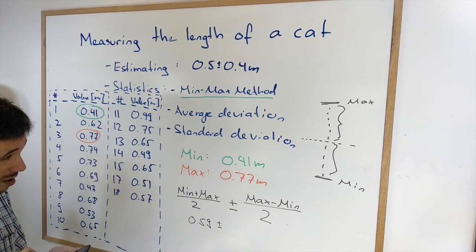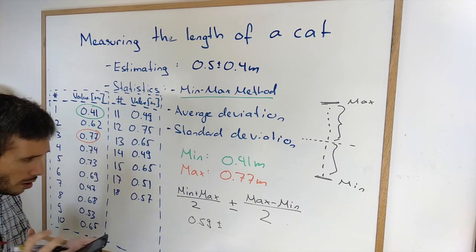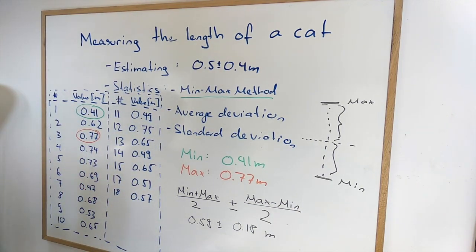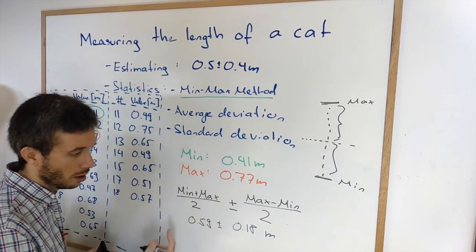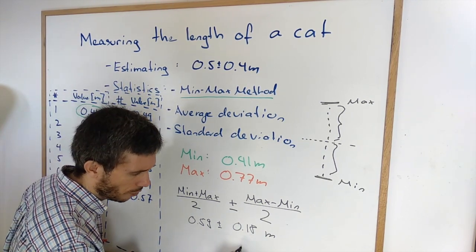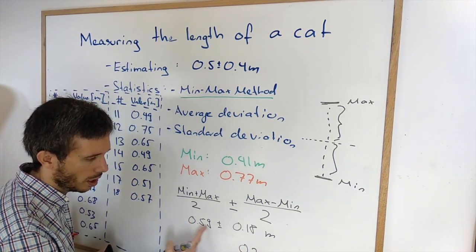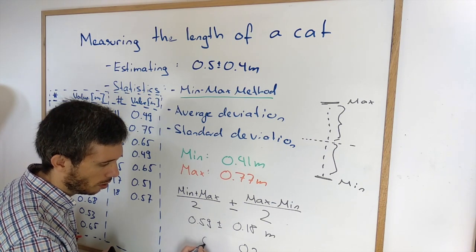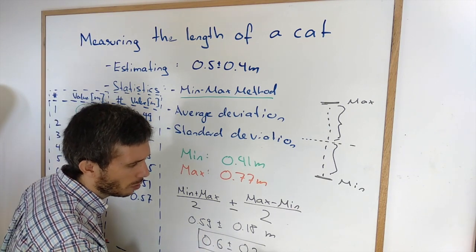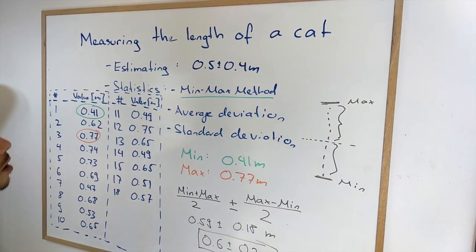So again we're talking here about a lot of uncertainties, so what I prefer to do is I'm going to round this to one significant figure, so plus minus 0.2 meters. And then I'm going to round this so I have only one estimated figure, so 0.6 plus minus 0.2 is what I'm going to report using the min-max method. So I can put my answer here next to it: with the min-max method I got 0.6 plus minus 0.2 meters.